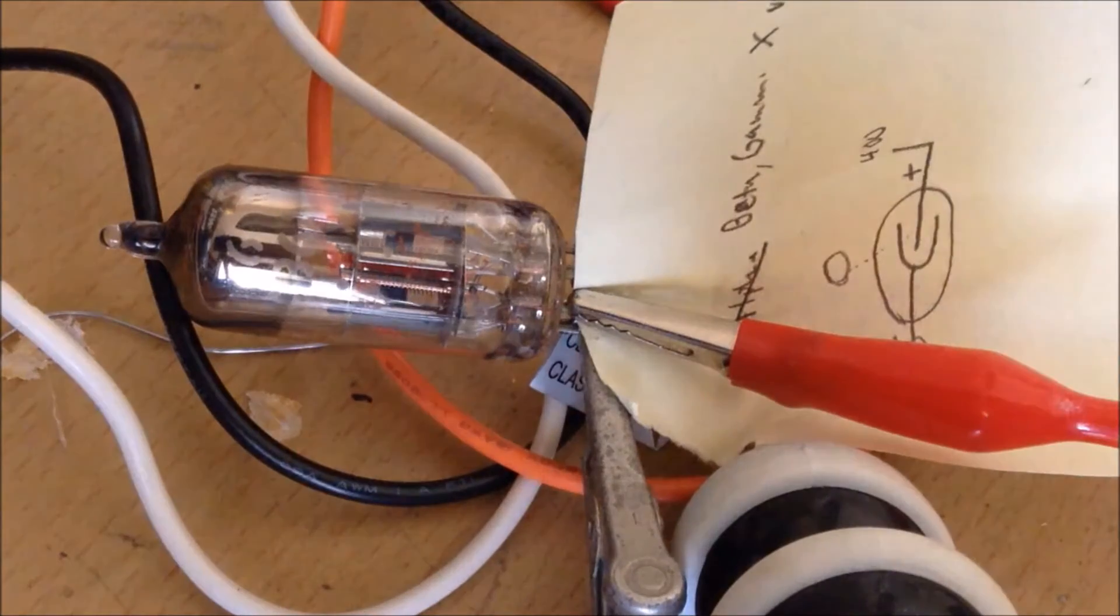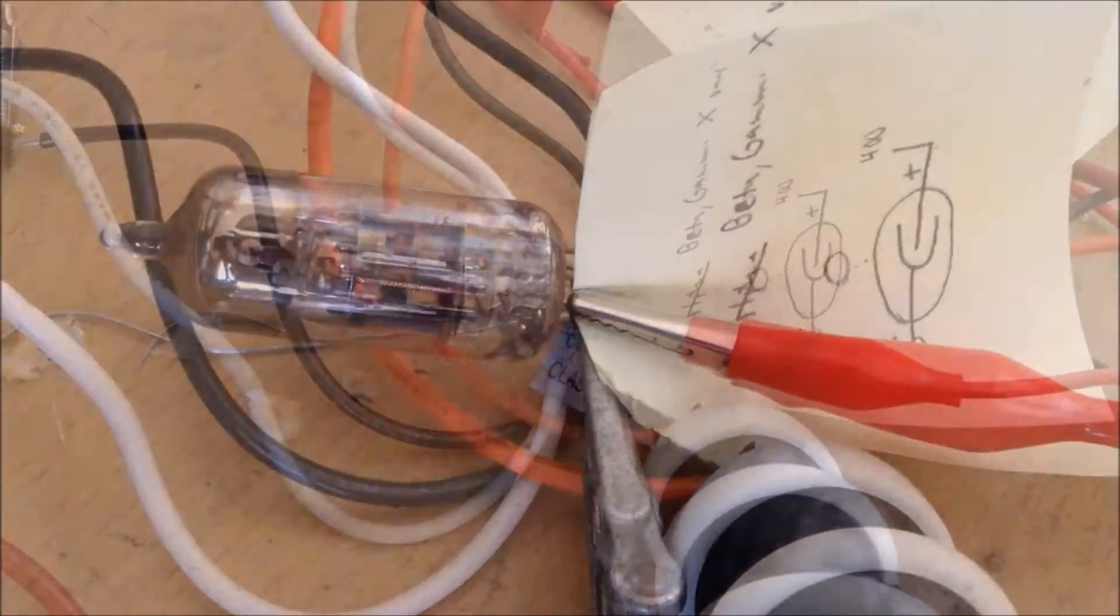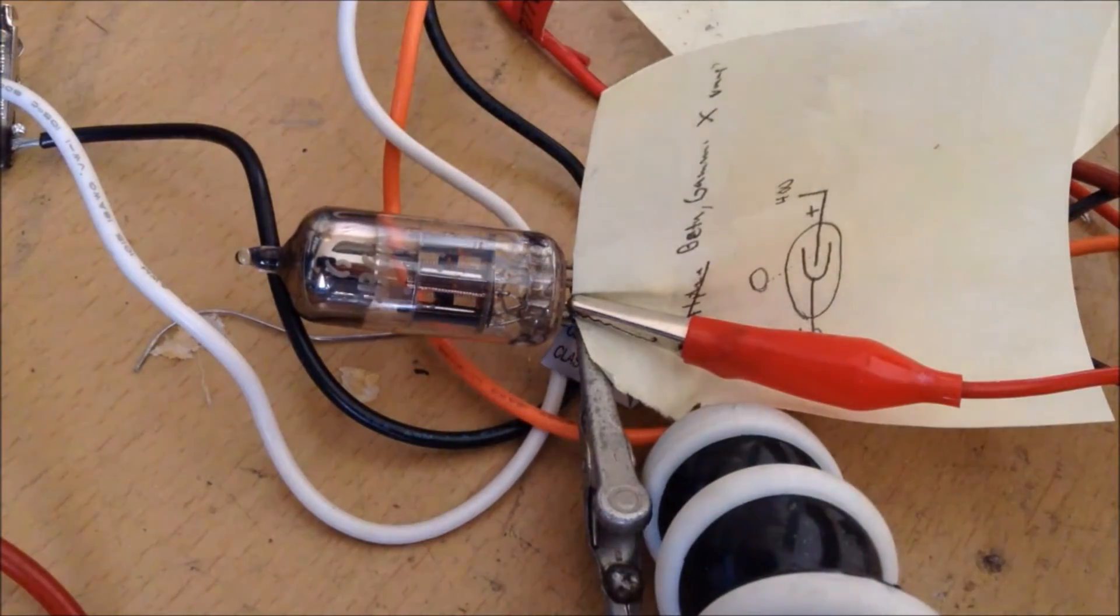So that's the vacuum tube toasting for you. Now to finish it off, I'm going to overvolt the filament.